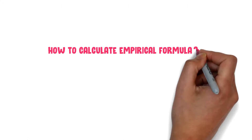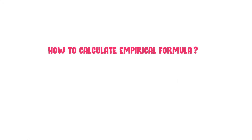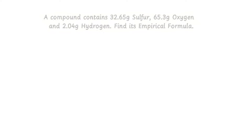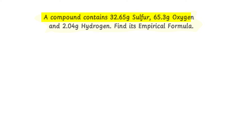How to calculate empirical formula. I will teach you the 3 easiest steps to calculate the empirical formula of any compound. Consider that a compound contains 32.65 grams of sulfur, 65.3 grams of oxygen, and 2.04 grams of hydrogen. Find its empirical formula.